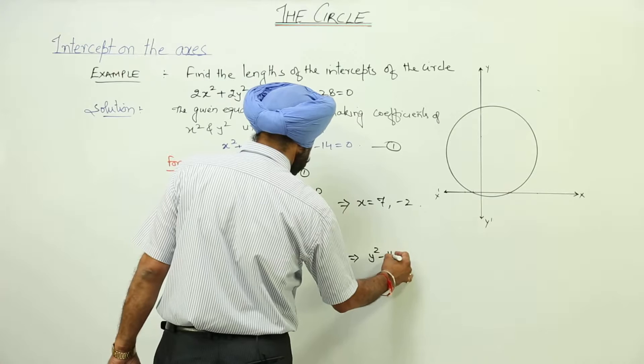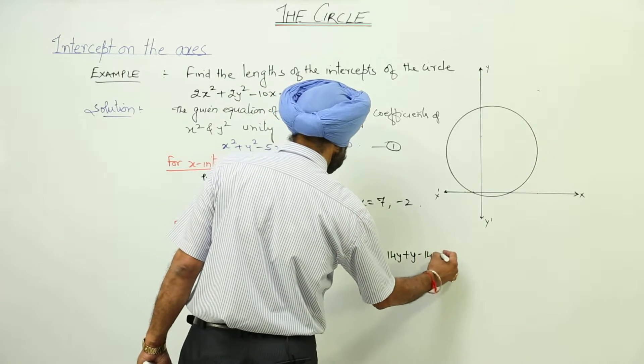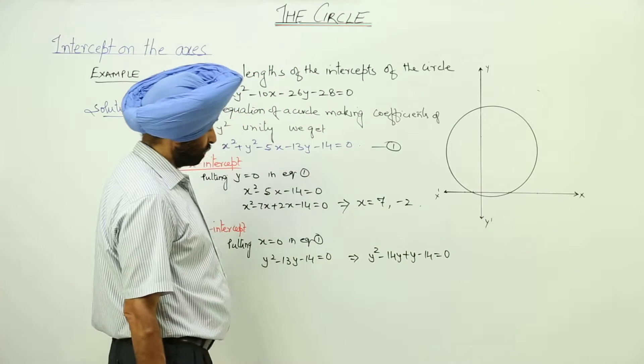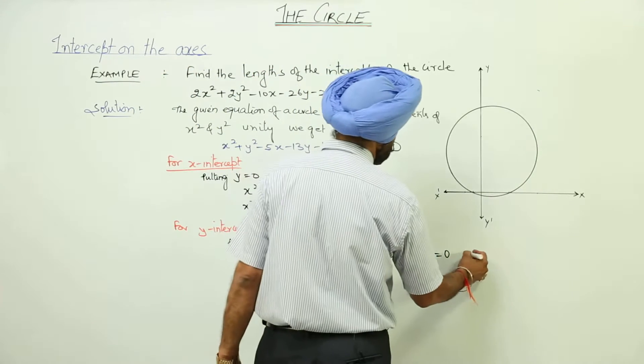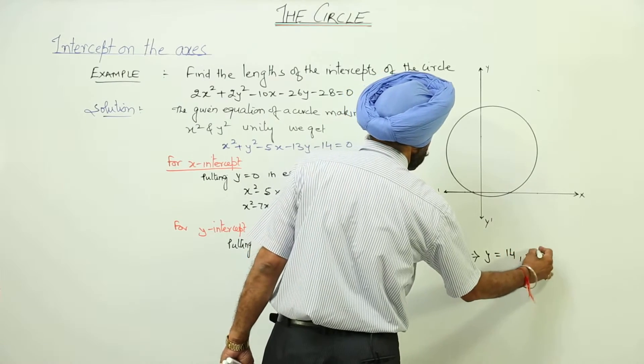y square minus 14y plus y minus 14 is equal to 0, and this gives us y is equal to 14 and minus 1.